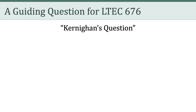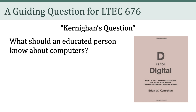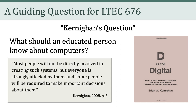Kernahan is famous for the various books he's written, such as his 2008 book titled D is for Digital. The subtitle of that book is What a Well-Informed Person Should Know About Computers and Communications. In this book, Kernahan asks an important question of modern society: What should an educated person know about computers? He goes on to explain why this deceptively simple question is so important.